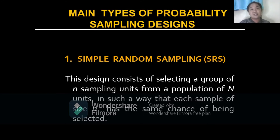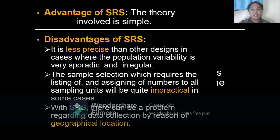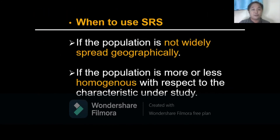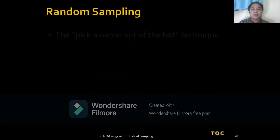Here are the advantages and disadvantages of simple random sampling. When to use simple random sampling: if the population is not widely spread geographically, and if the population is more or less homogeneous with respect to the characteristics under study.